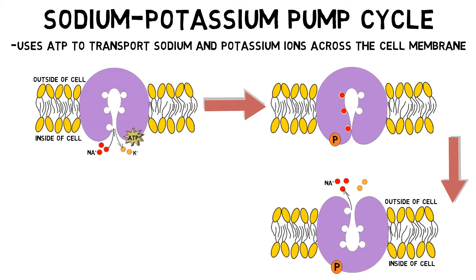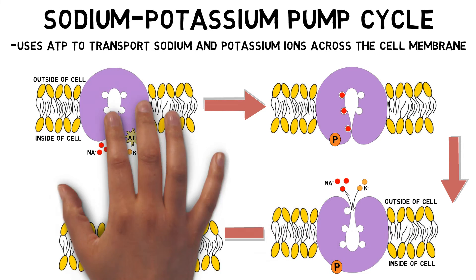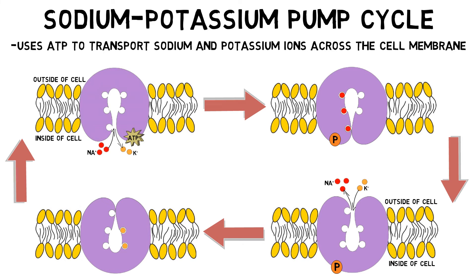At the same time, the pump binds two potassium ions, which also prompts another conformational change that returns the pump to its previous configuration, and the cycle begins again. Each cycle of the pump causes three sodium ions to move out of the cell and two potassium ions to move into the cell. Because there is one more positive charge leaving the cell than entering, there is a net loss of positive ions, which makes the resting membrane potential of the cell slightly more negative.